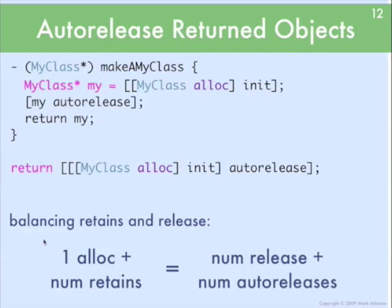A slight variation on how to look at this is the balancing of retains and releases. If you look at this code, we've got one alloc, no retain calls, and one auto-release with no release calls. There's a basic rule that in any method for a particular object, these things should balance: the number of allocs plus the number of retains should equal the number of releases plus the number of auto-releases. It's not always quite as straightforward — you might have a release in a destructor — but basically you have to think about the lifecycle of the object and whether you have a balance between allocs and retains versus releases and auto-releases.